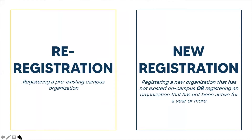An organization that has existed in the previous academic year would be re-registering for the current academic year. Every year, organizations must re-register in order to be considered active on campus. An organization that has not existed at UCI would be filling out a new registration. Additionally, if an organization previously existed on campus but was not active in the prior academic year, then the organization would need to complete a new registration.